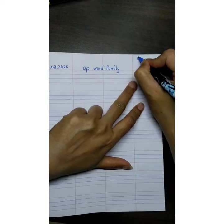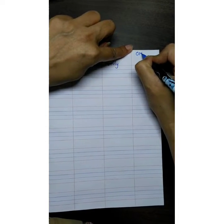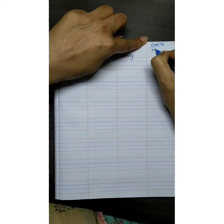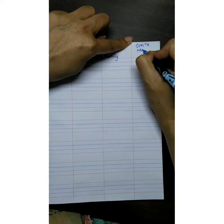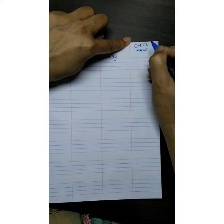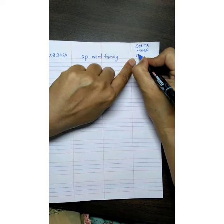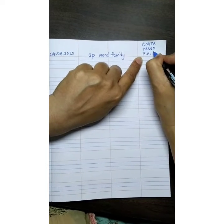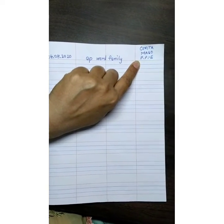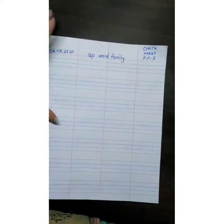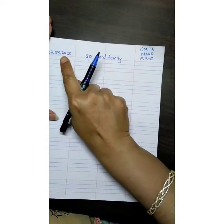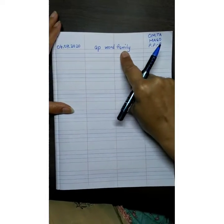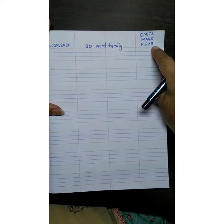And here what will we write? Yes! You remember. Here we will write your name, not Omita maam's name. So date, app, word, family, name and class, correct?